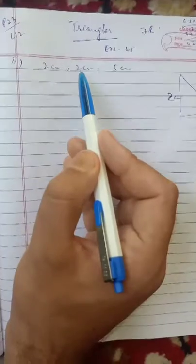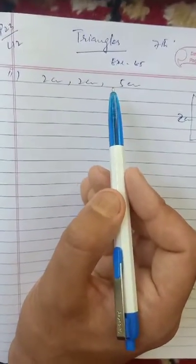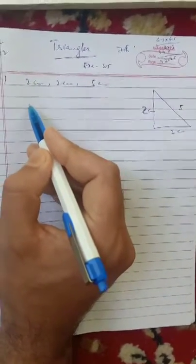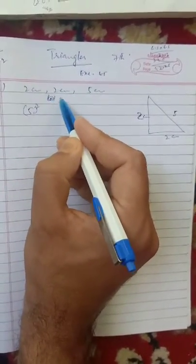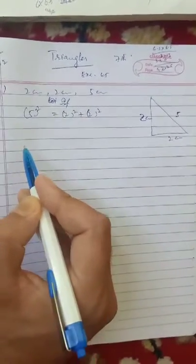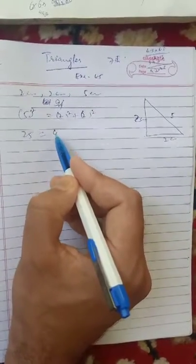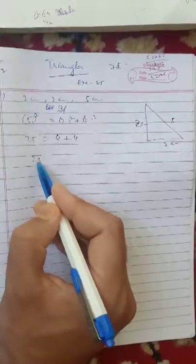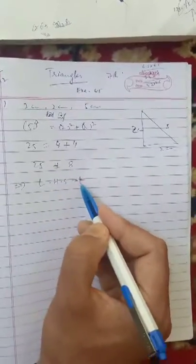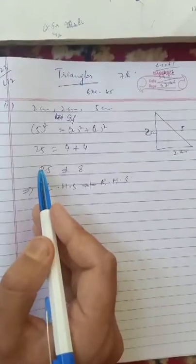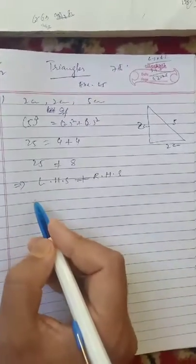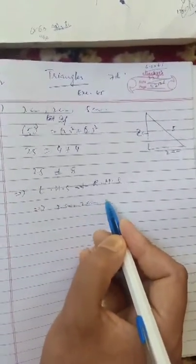Second part: 2 centimeter, 2 centimeter, and 5 centimeter. Five square equals 25. Two square plus two square equals four plus four equals eight. LHS equals 25, RHS equals 8. Which implies LHS is not equal to RHS. Left hand side is 25, right hand side is 8. Which implies 2 centimeter, 2 centimeters, and 5 centimeter cannot form a right triangle.